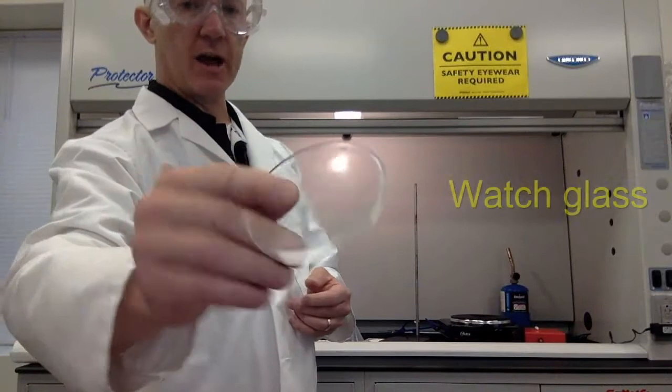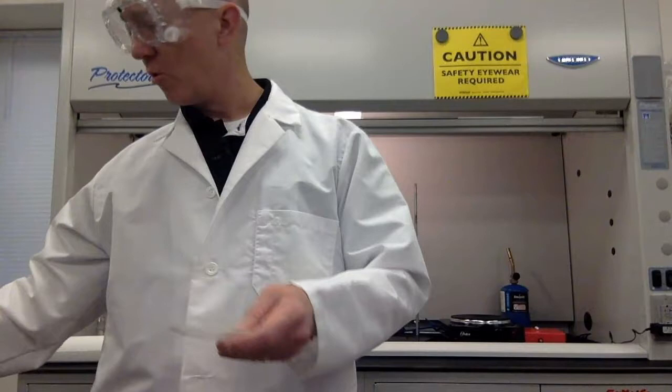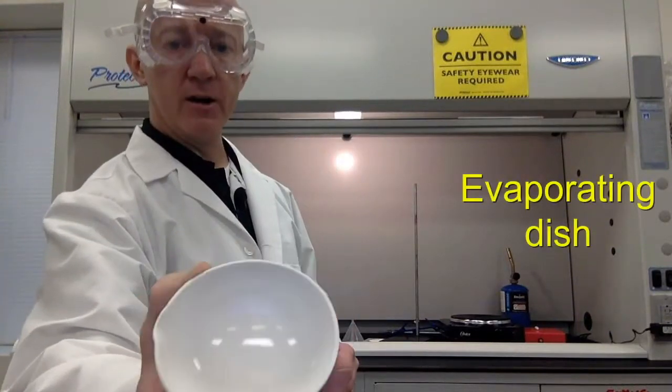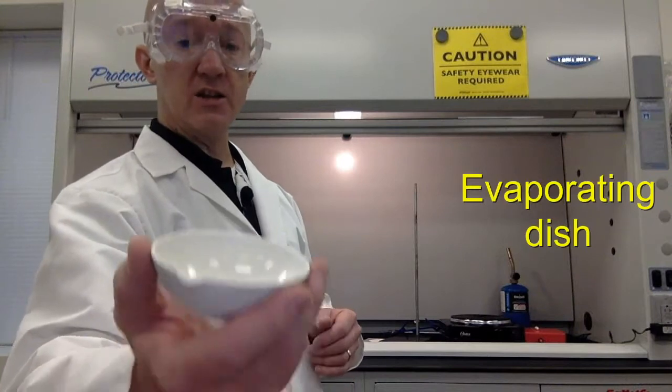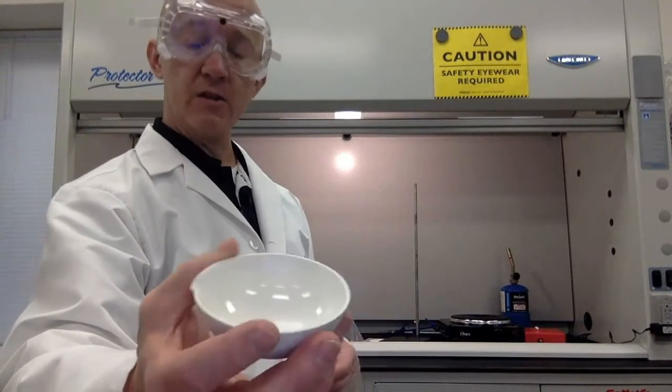This is a watch glass. This can be used in various ways from allowing a wet solid to dry or to cover a beaker like so. This is called an evaporating dish. We can gently heat a stable solid in this evaporating dish. And it will take the liquid away, leaving the solid.